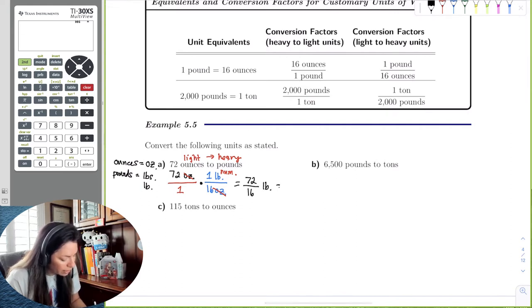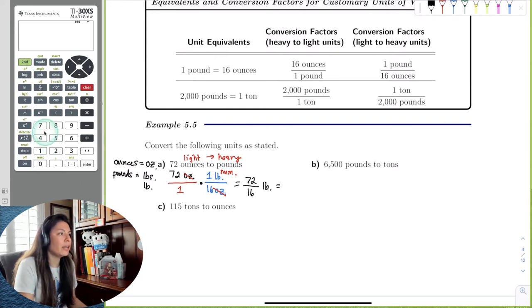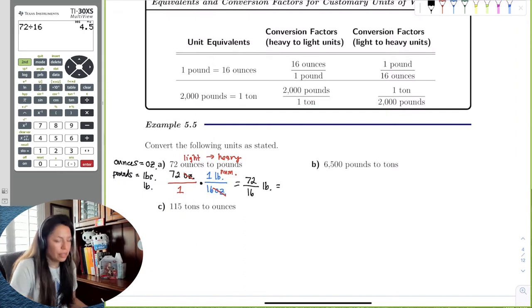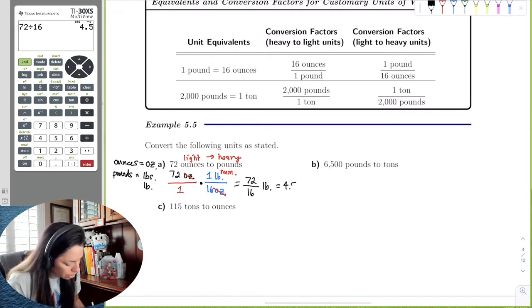If we just put it in the calculator, we're given whole numbers, so we just can round to one decimal place, four and a half pounds, LBS.